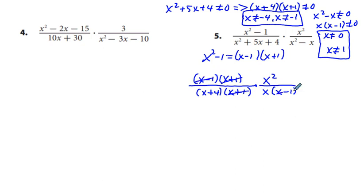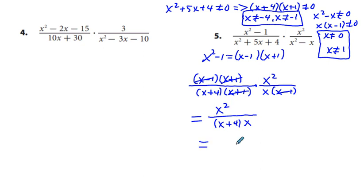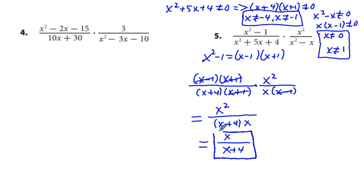Now we can cancel: x plus 1 over x plus 1 cancel, and x minus 1 over x minus 1 cancel. Left in the numerator we have x squared; in the denominator, x plus 4 times x. x squared over x simplifies to x, so we have x over quantity x plus 4. We have all our excluded values and our final answer.